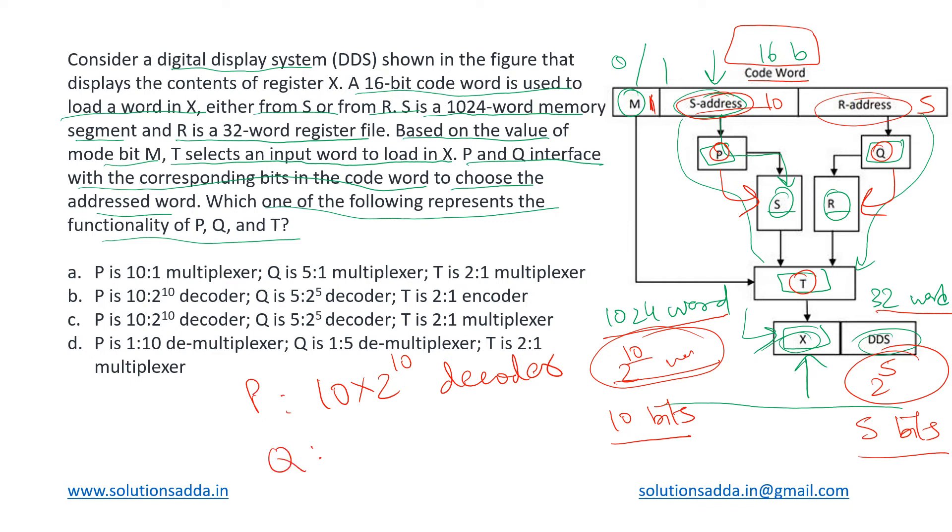Similarly, the device Q will be - it is having 2 to the 5 words and out of that one has to be chosen - so that will need us a 5 cross 2 to the power 5 decoder. So now we know what kind of devices are these P and Q. Now we are also asked about this T. What does T is doing?